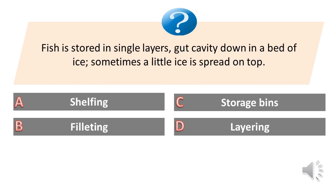Fish is stored in single layers, gut cavity down in a bed of ice, sometimes a little ice is spread on top. A. Shelfing. B. Filleting. C. Storage bins. D. Layering. Answer is A. Shelfing.